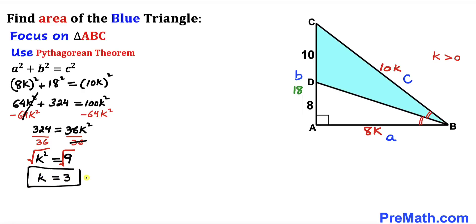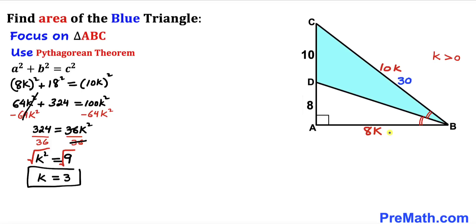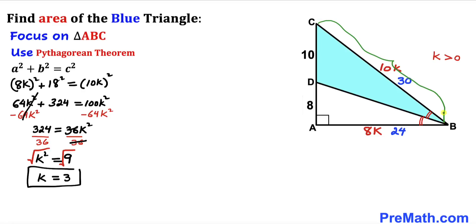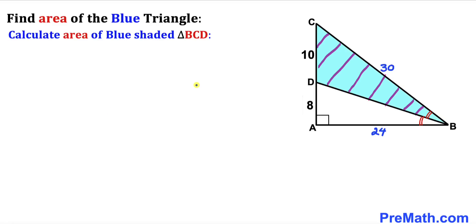So I'm going to replace K by 3. For 10K: 3 times 10 gives us 30. For 8K: replacing K by 3, 8 times 3 gives us 24. So side length AB turns out to be 24 units, and side length BC turns out to be 30 units.